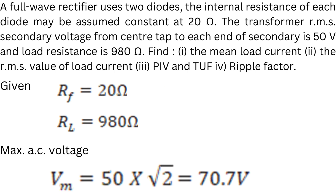Consider another problem. A full-wave rectifier uses two diodes. The internal resistance of each diode may be assumed constant at 20 ohms. The transformer RMS secondary voltage from center tap to each end of the secondary is 50 volts, and load resistance is 980 ohms. Find: mean load current, RMS value of load current, peak inverse voltage, TUF, and ripple factor.